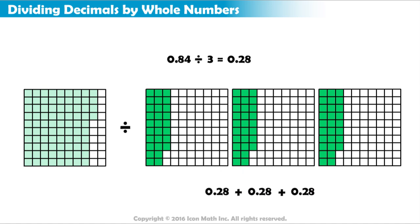If we totaled all of our 3 arrays, we would have 84 hundredths. So our answer is correct.